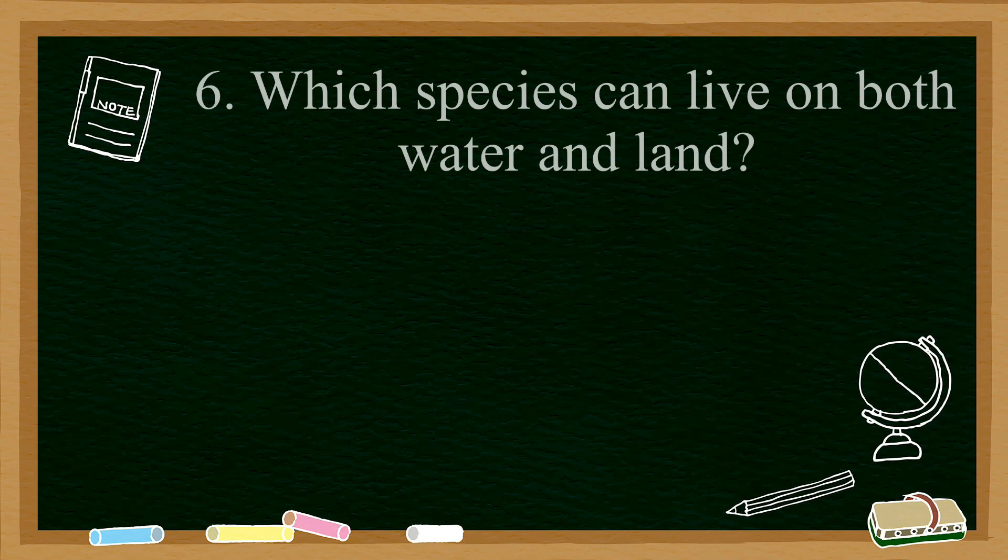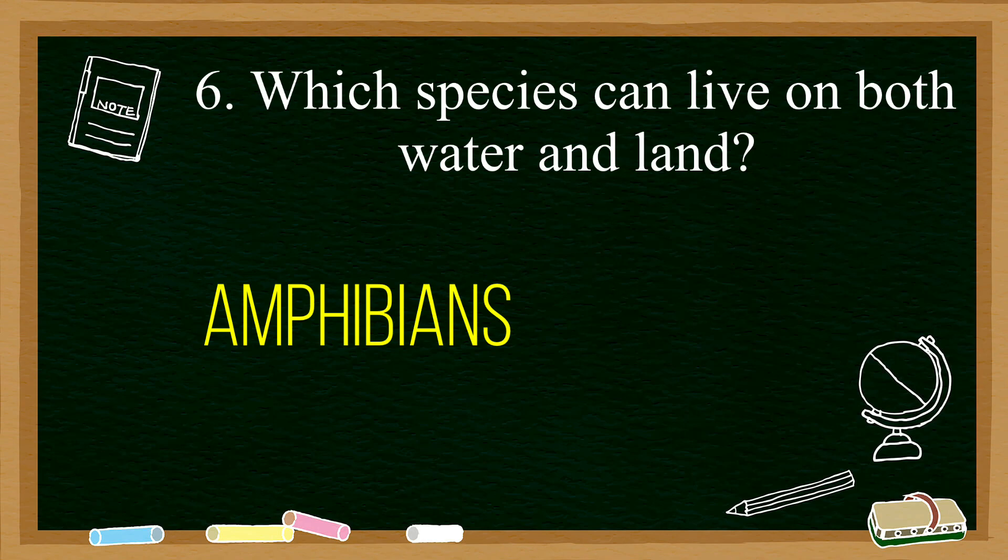Number six: which species can live on both water and land? This is a pretty obvious question as it's something we learn from a very small age. Amphibians can live on both water and land, and an example is a frog.